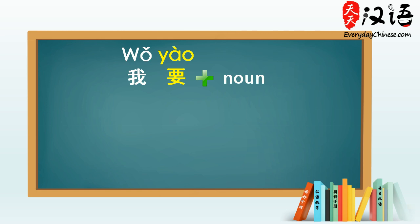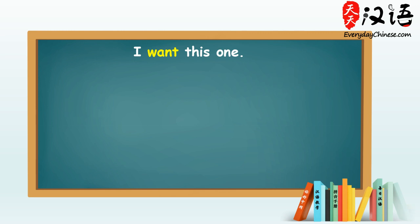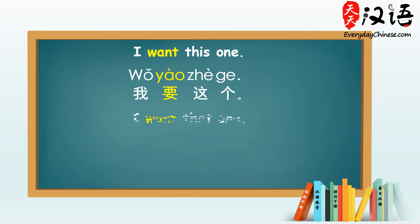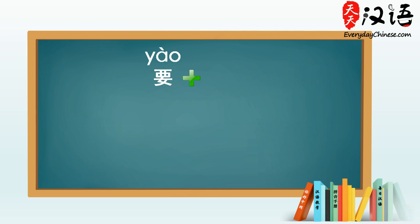For example, 我要一杯茶 — I want a cup of tea; 我要那个 — I want that one. In addition, we can use 要 plus a verb to express what you want to do.